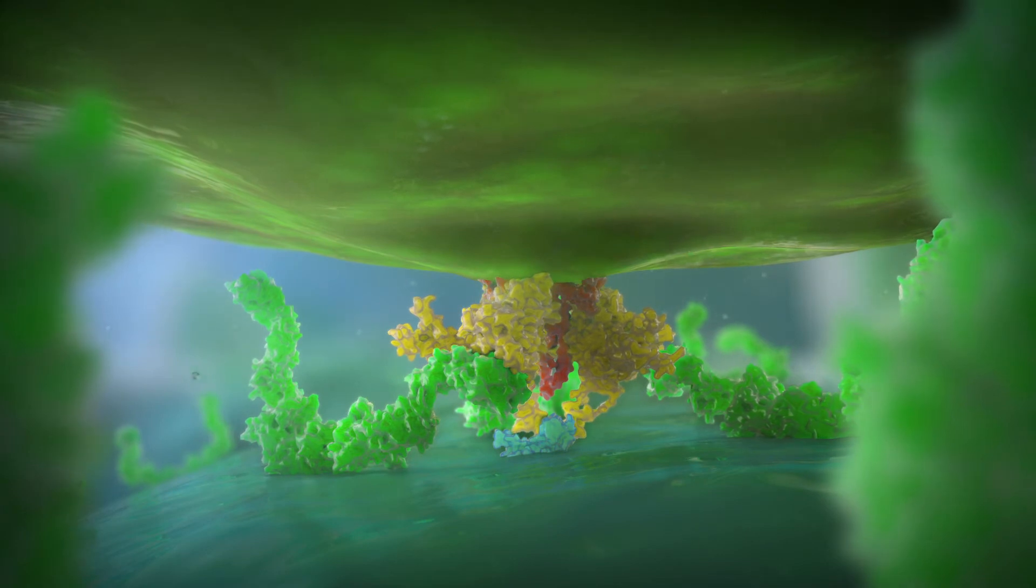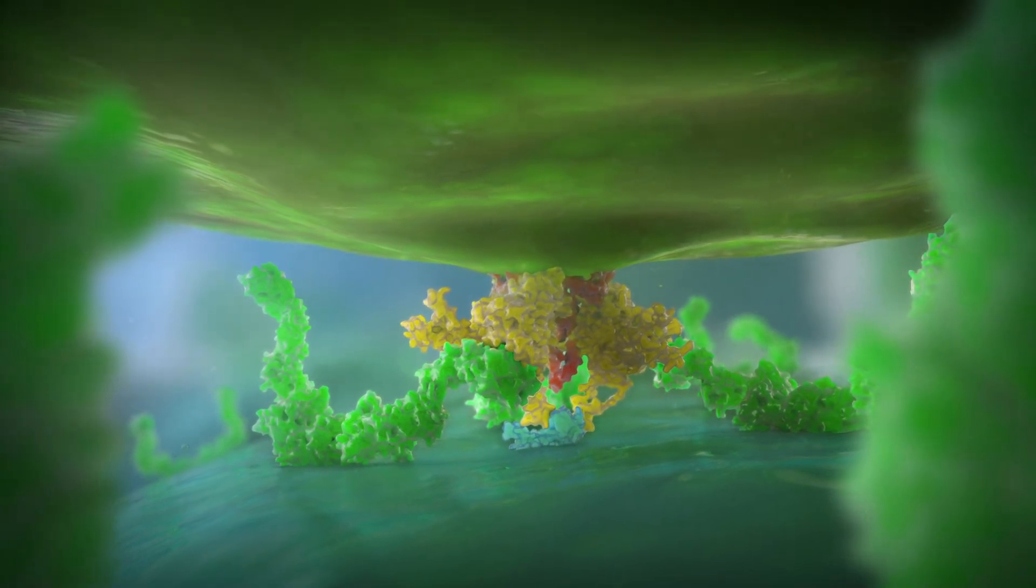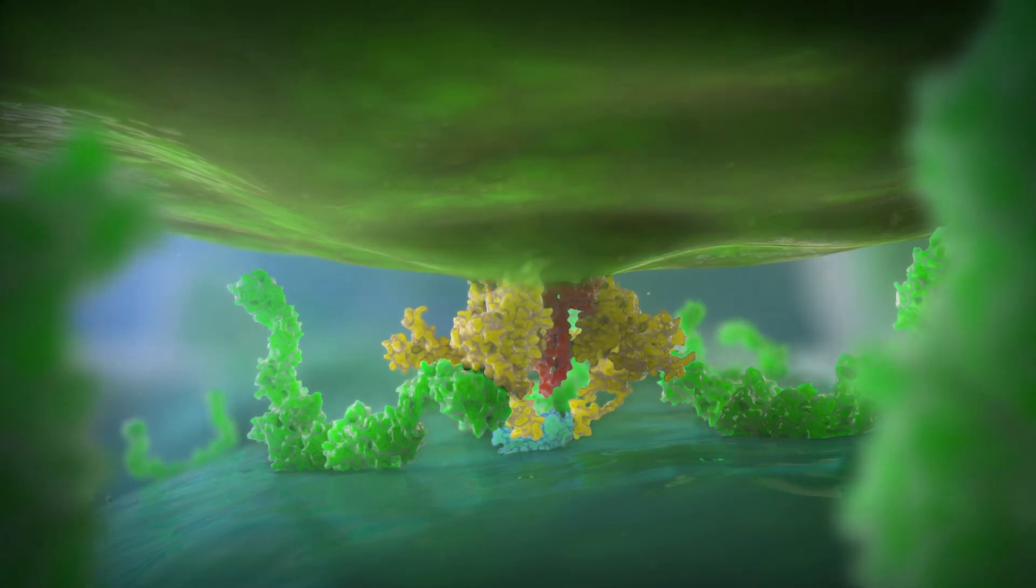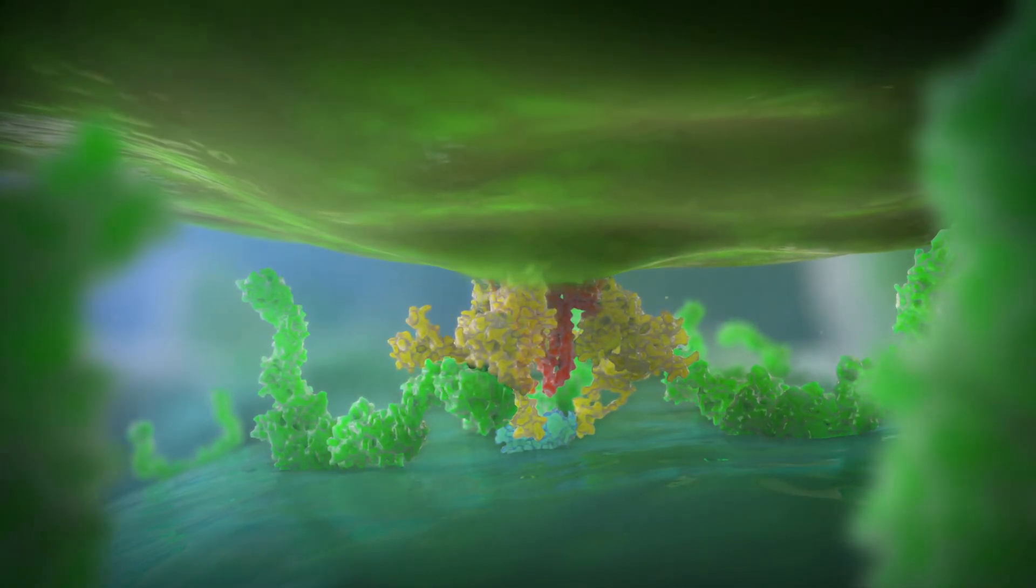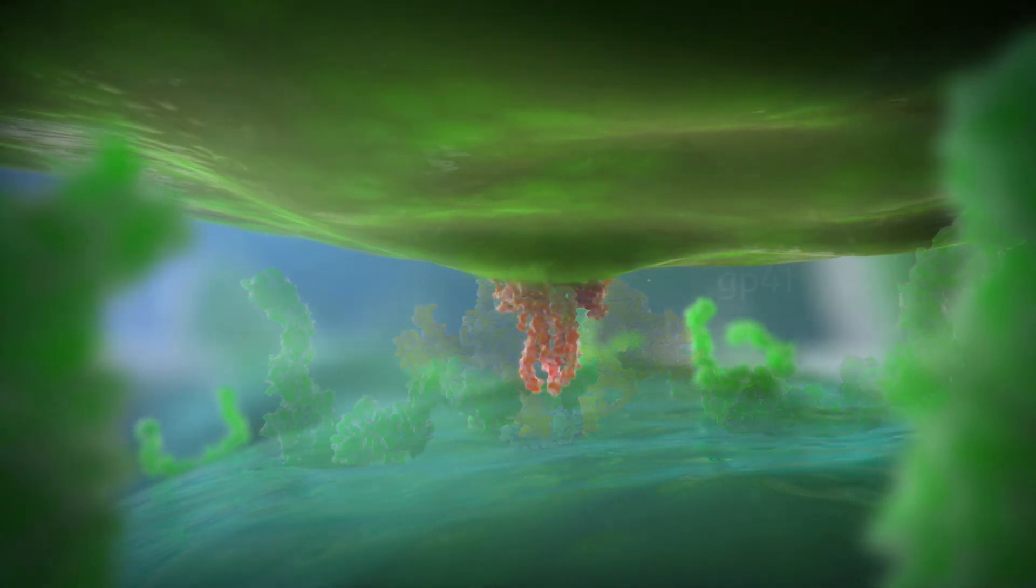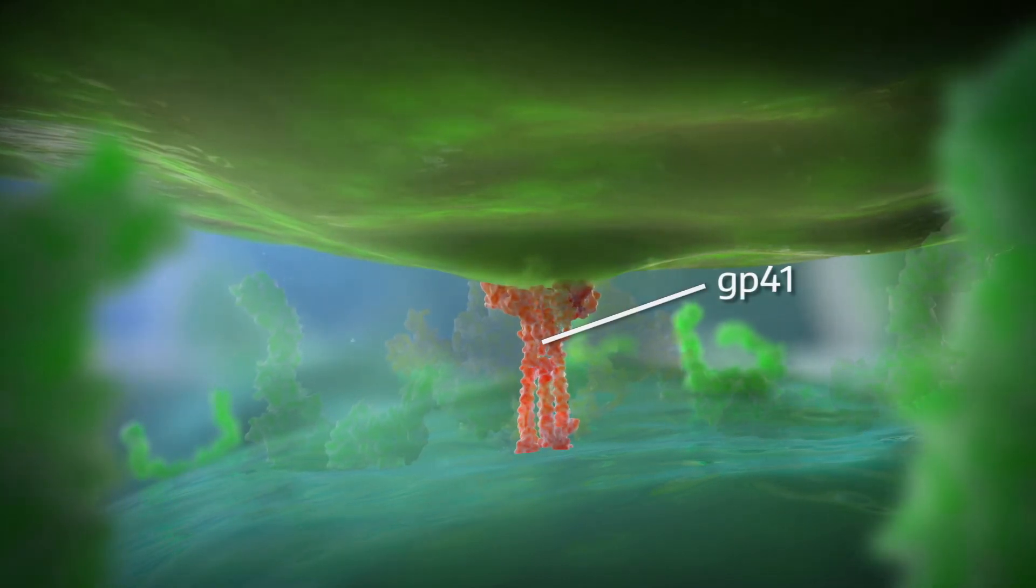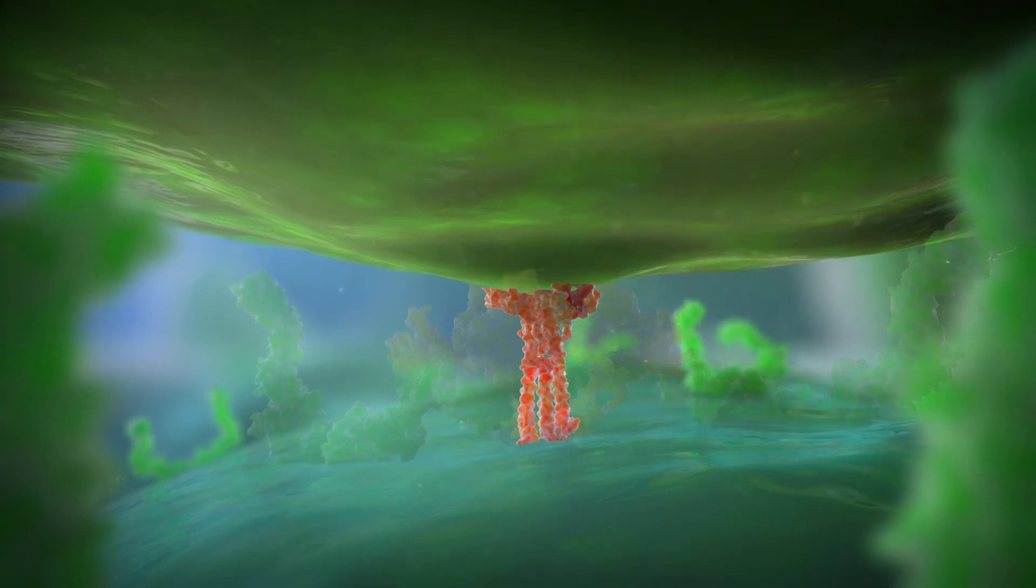The binding of GP120 to the co-receptor causes another structural shift in the envelope glycoprotein, resulting in shedding of GP120 and the exposure of GP41. GP41 is then inserted into the T cell membrane, facilitating the fusion process that allows the virion to insert its genetic content into the T cell.